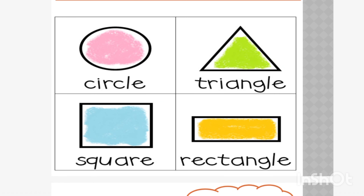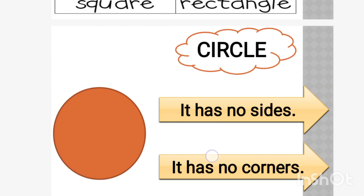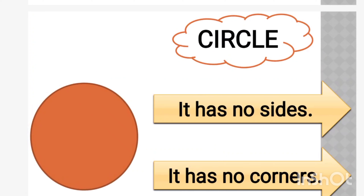Dear students, in last class we discussed about different types of shapes like circle, triangle, square, and rectangle. Today we are going to learn more about these shapes. Here we can see the first shape given, which is circle.